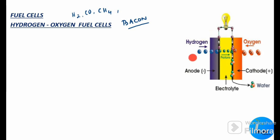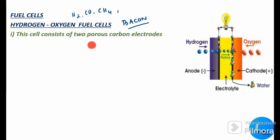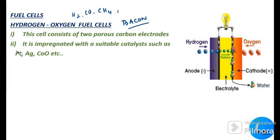Let us see how the hydrogen-oxygen fuel cell is constructed. This cell consists of two porous carbon electrodes — porous meaning they have small pores. These two electrodes are made up of carbon and are impregnated with a suitable catalyst such as platinum, silver, or cobalt oxide.